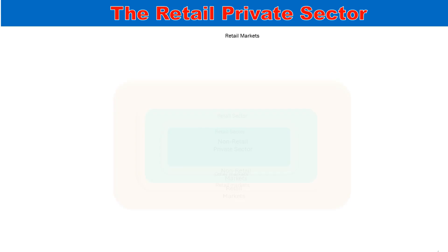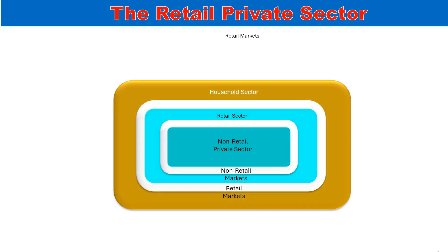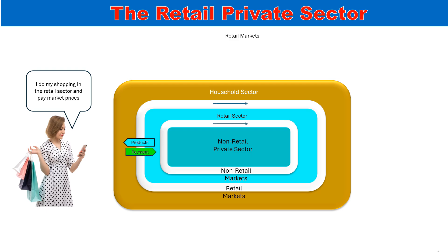In this illustration, we focus on the retail private sector and markets, where the householder is shown shopping. The blue and green arrows represent the retail transactions. This continuous gap between households and firms is the retail market conduit, where transactions take place and economic flows circulate.